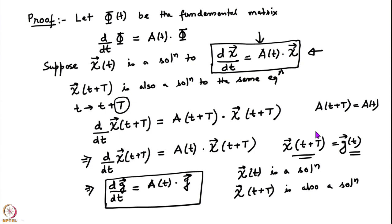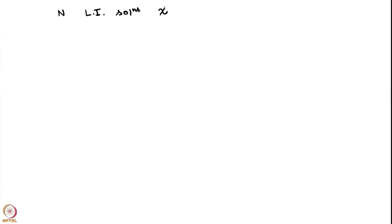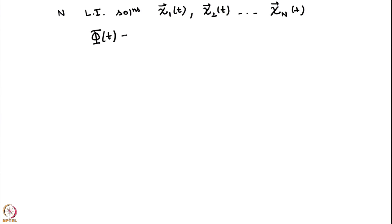Now let us look at these solutions χ(t) and χ(t+T). Suppose we have found n linearly independent solutions and I will call them χ₁(t), χ₂(t) and so on up to χₙ(t). We can form a fundamental matrix of our system, φ(t), which is basically all the χ's arranged side by side as columns.